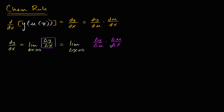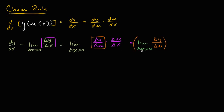But what's this going to be equal to? Well, the limit of the product is the same thing as the product of the limits. So this is going to be the same thing as the limit as delta x approaches zero of delta y over delta u — and I'll color code it — times the limit as delta x approaches zero of delta u over delta x.